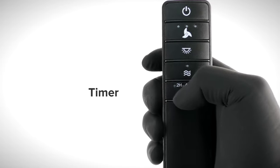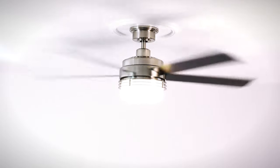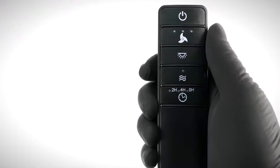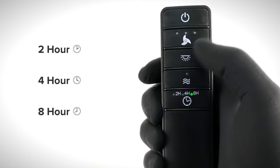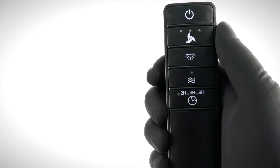The timer button turns the fan and light off after a certain amount of time has passed. The delay can be set to 2 hours, 4 hours, or 8 hours. Pressing the button a fourth time will deactivate the timer function.